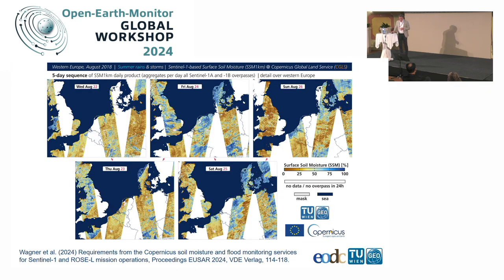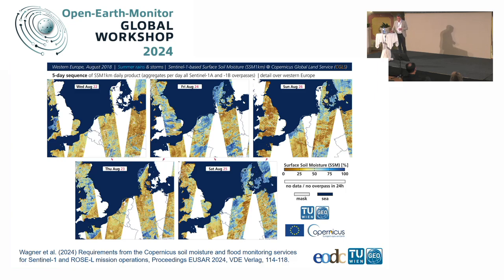This is a sequence of images from August 22 through 26. You see the coverage that Sentinel-1A and Sentinel-1B were providing on a daily scale, and you see the weather patterns — large-scale rainfall fronts — leaving stripes in the imagery. It also shows how extremely important it is to have high temporal coverage to actually capture this very dynamic phenomenon.